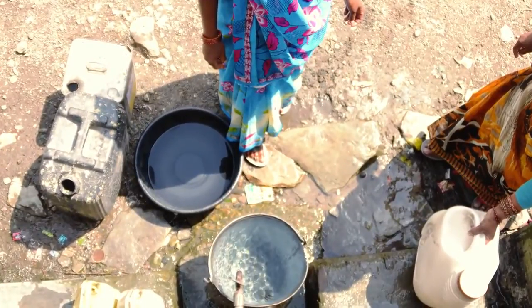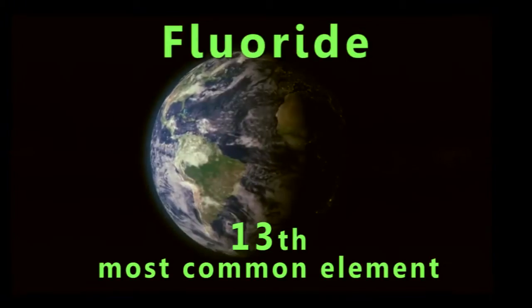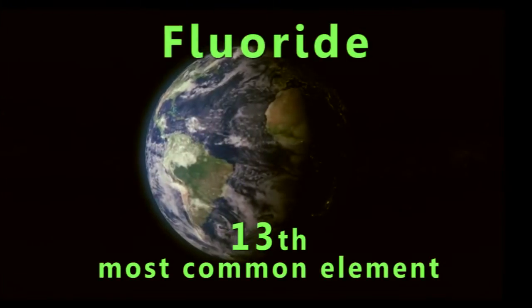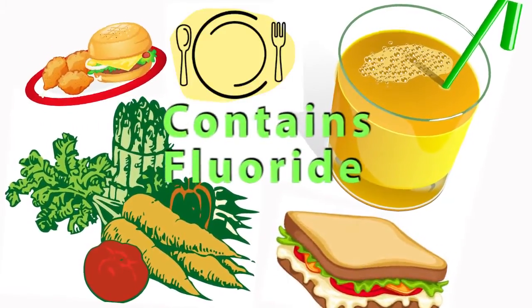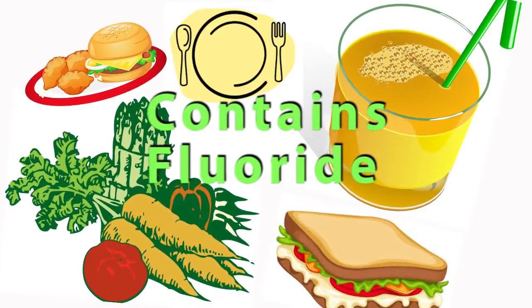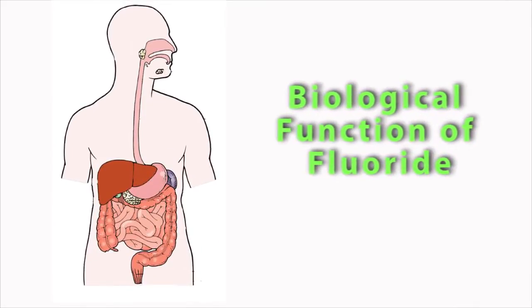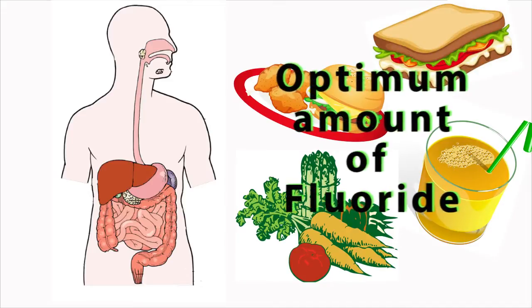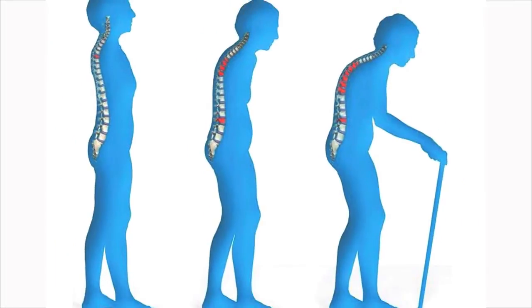Secondly, water may contain excessive amounts of elements such as fluoride and arsenic. Fluoride is the 13th most common element in the earth's crust, and that's why everything we eat and drink contains fluoride. There is a biological function of fluoride — if one were to take optimum amounts, it lessens the incidence of dental caries and decreases the incidence of osteoporosis.